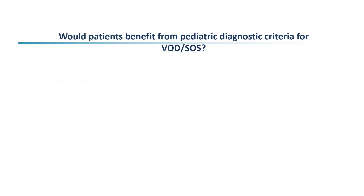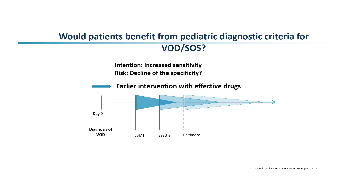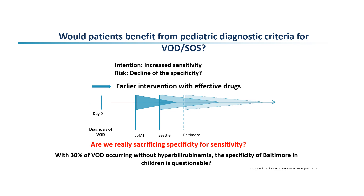Would patients benefit from pediatric diagnostic criteria for VOD? The intention is increased sensitivity, but the risk is a decline in specificity. However, when we look at the old criteria, we are now happy to intervene earlier with effective drugs. Are we really sacrificing specificity for sensitivity? I would say no — with 30% of VOD occurring without hyperbilirubinemia, the specificity of Baltimore criteria in children is really questionable.